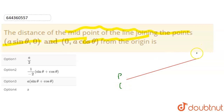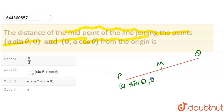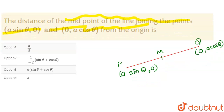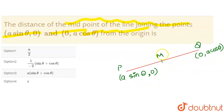First, we are given a line. Let's call the first point P and the second point Q, with midpoint M. The coordinates of P are (a sinθ, 0) and the coordinates of Q are (0, a cosθ).